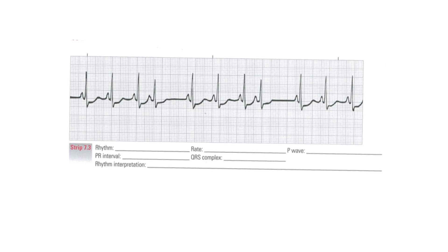In 7.3, this rhythm is primarily regular except for some premature beats that make it irregular. The rate is 94. When doing the rate, you look at the R to R's and use your small box conversion table. There are P waves, so they are sinus. The PR interval is 0.12 to 0.14 - measured right in front of the P to the QRS. The QRS is normal - measured from the beginning to where the S wave comes up to the isoelectric line, about two boxes. The rhythm interpretation is normal sinus rhythm with two PACs.